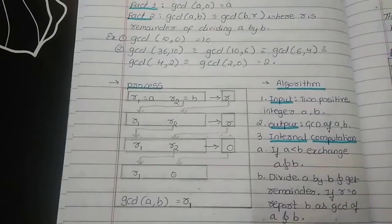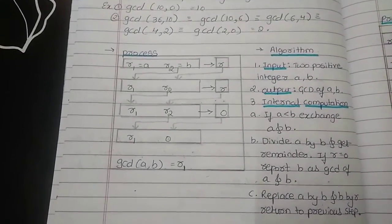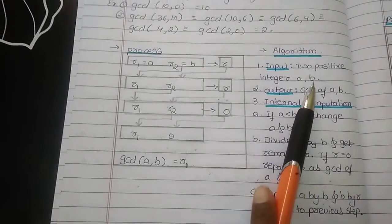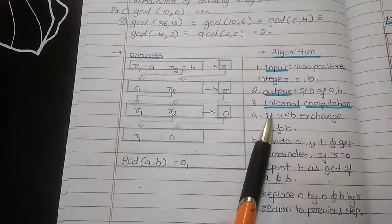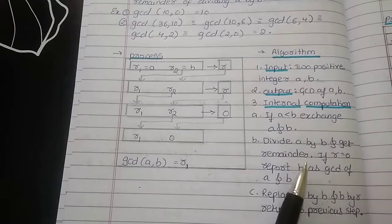Now, let us see the steps involved in Euclidean algorithm. Here the input is 2 positive integers A and B. The output is GCD. If we see the internal computation,